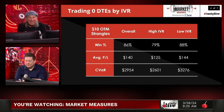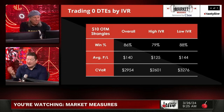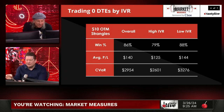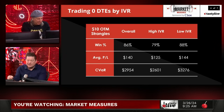Moving to 10-delta wide strangles: low IVR outperformed again with a really high win rate. Low IVR made $144 versus high IVR made $125. Again, a higher percentage of winning trades with low IVR. In this zero DTE world, the difference between a 79% and 88% win rate doesn't mean much — they're both very high probability trades. But the data shows low IVR outperforms high IVR here.